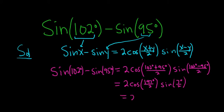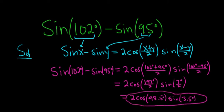This is equal to 2 cosine. If you work this out, you get 98.5 degrees. Sounds like a temperature. And then if you work this out, you get 3.5 degrees. And that's the final answer. You can't really go much further than that without using a calculator. I hope that made sense.